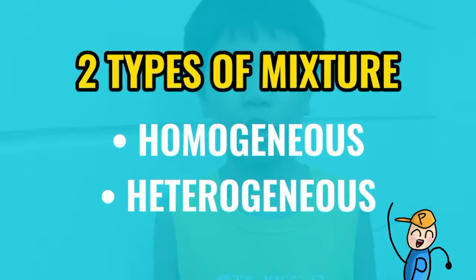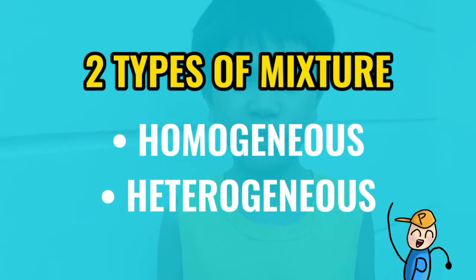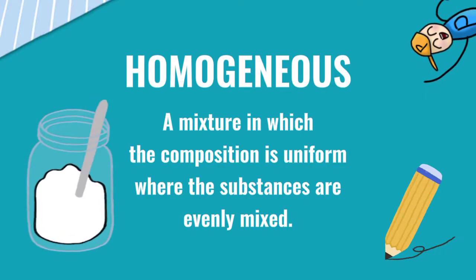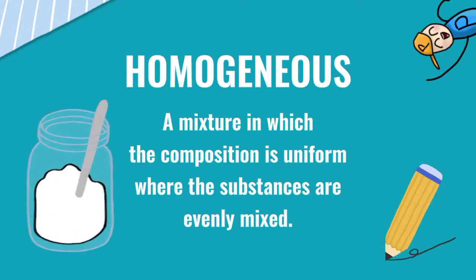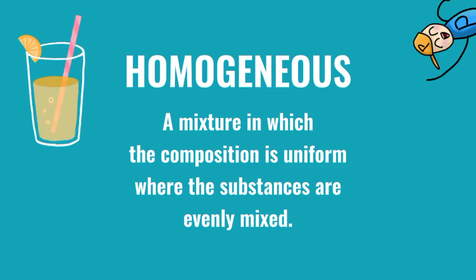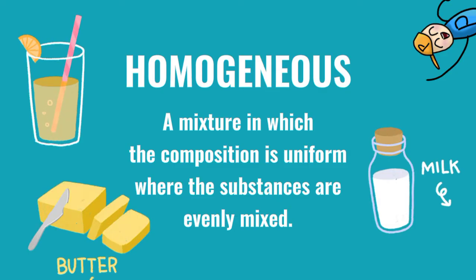Today, we're gonna learn about two types of mixtures: the homogeneous and heterogeneous mixtures. Homogeneous is a mixture in which the composition is uniform, where the substances are evenly mixed. Juice, milk, and butter are some of the examples of homogeneous.